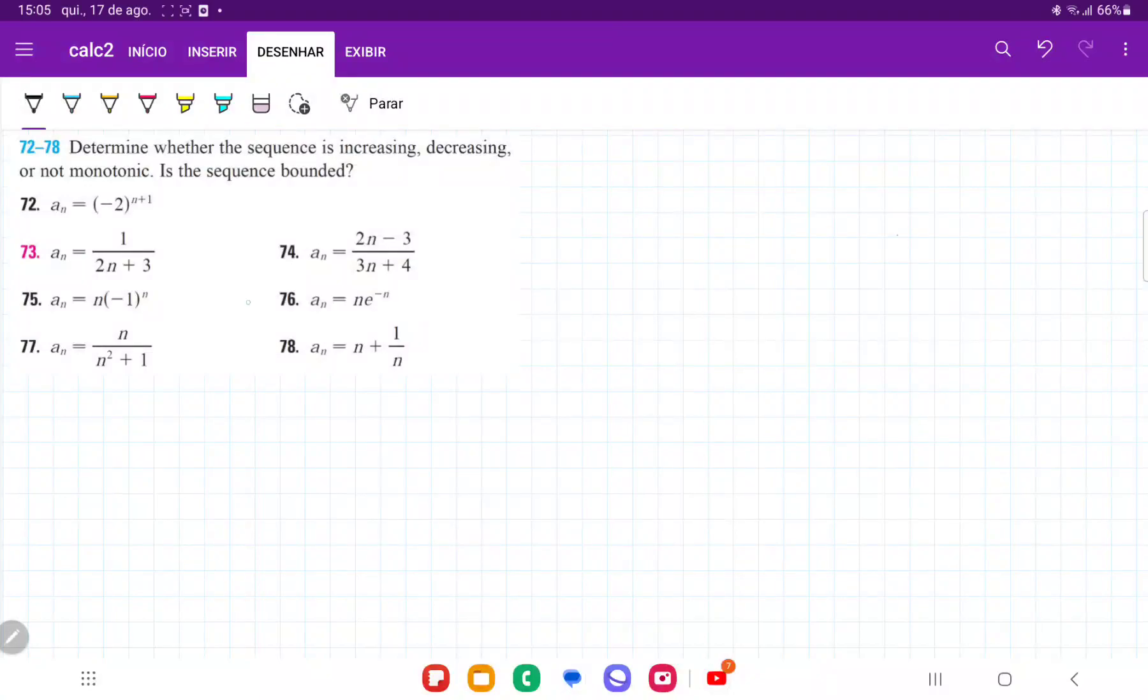So for number 73, they want us to look at this sequence here and determine whether it is increasing, always increasing, always decreasing, or not monotonic. Not monotonic means that it switches from increasing to decreasing and vice versa.